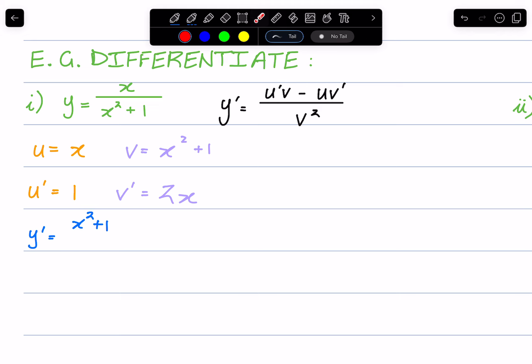Following the rule, minus x times 2x, so we get -2x², all over v squared, so (x² + 1)².